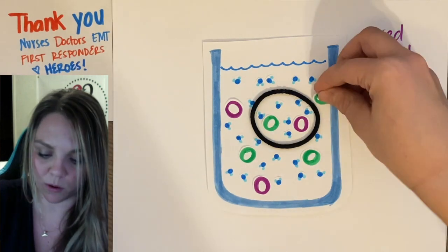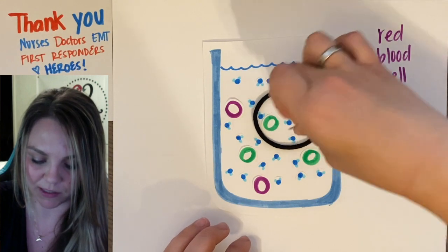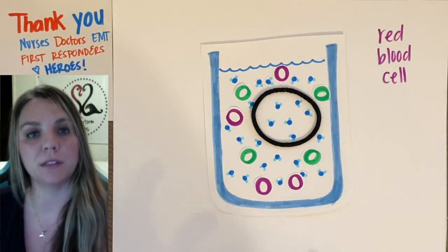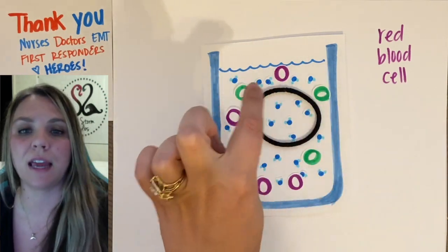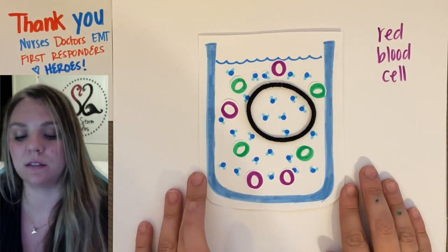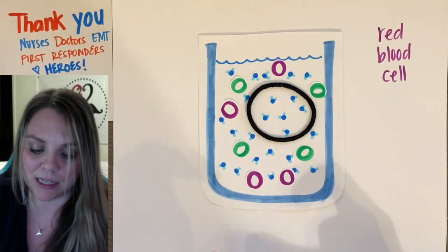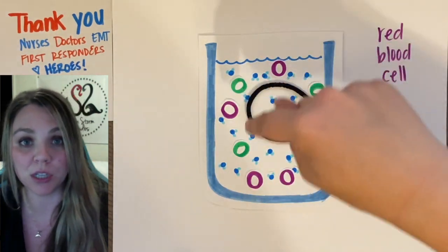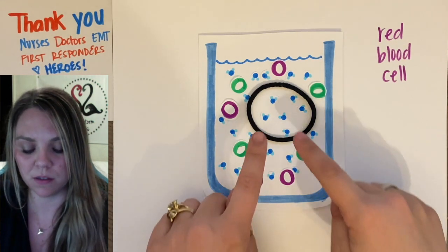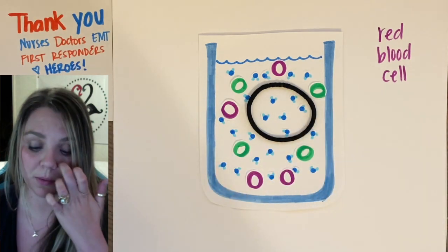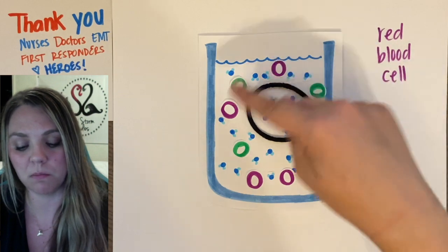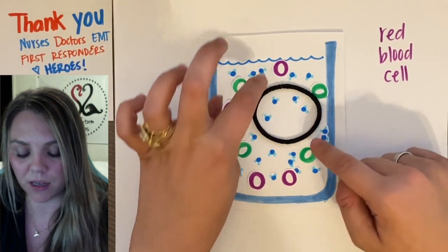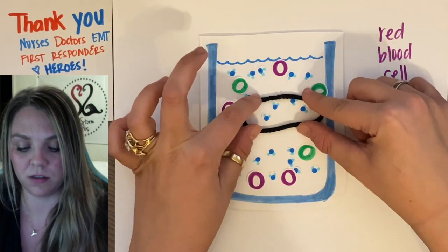If I keep adding more and more salt to the outside of my cell, I have a ton of salt on the outside in comparison to the inside — this would be considered a hypertonic solution. My cell is in a solution with a higher concentration of solute — salt, sugar, whatever. Osmosis is going to occur, meaning water will flow through the semi-permeable membrane to try to even out the solution. There's more salt outside than inside, so water is going to flow out of my red blood cell and my red blood cell is going to start to shrink.